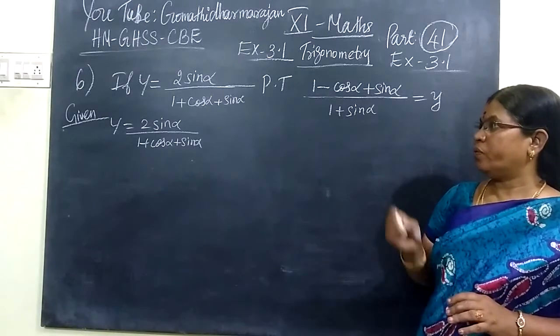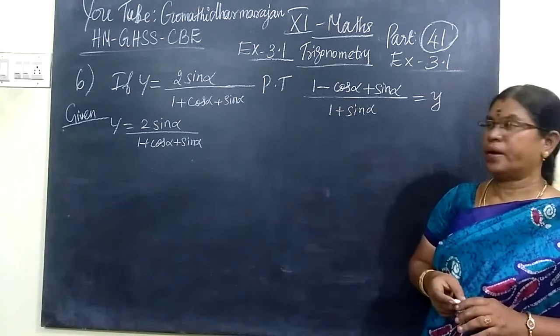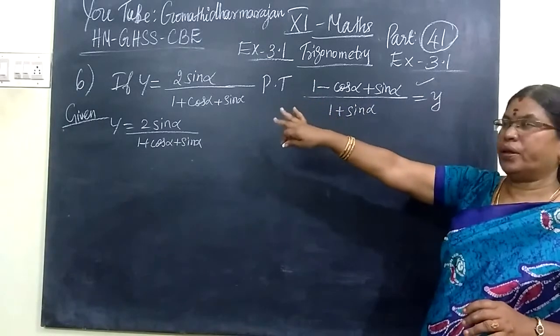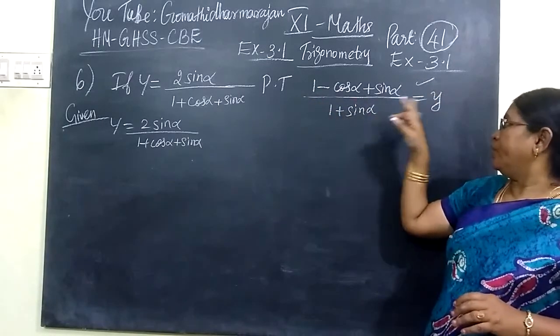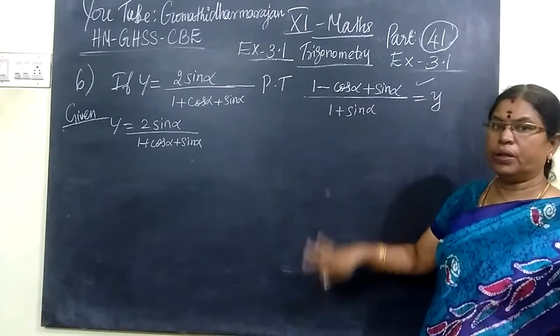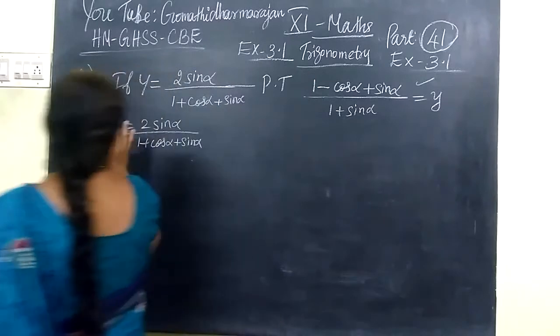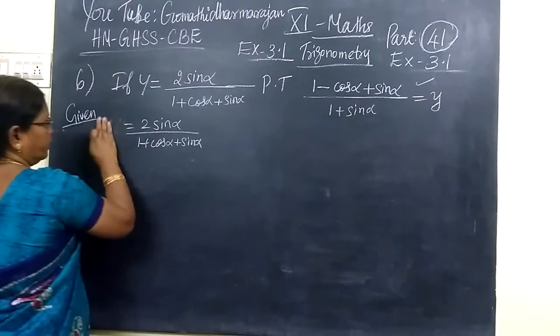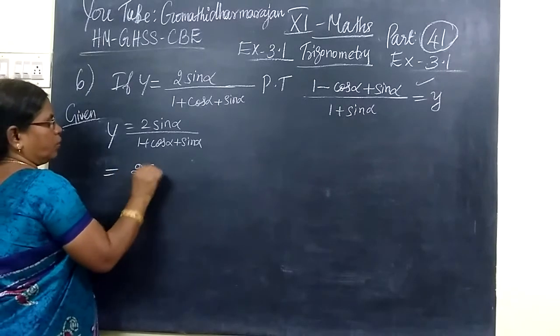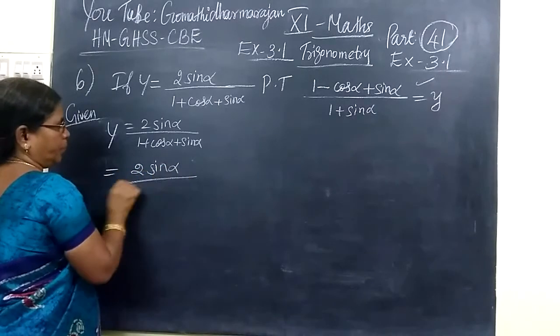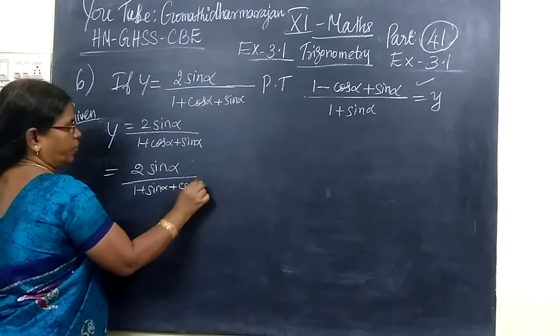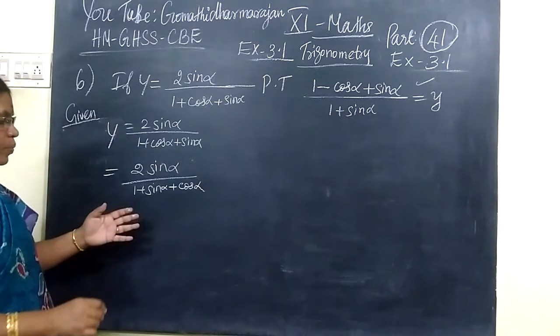If y equals 2 sin alpha divided by 1 plus cos alpha plus sin alpha, we have to prove this. That means, under the y term, we have to derive the term as 2 sin alpha divided by 1 plus cos alpha plus sin alpha. Here is the rearrangement of denominator.